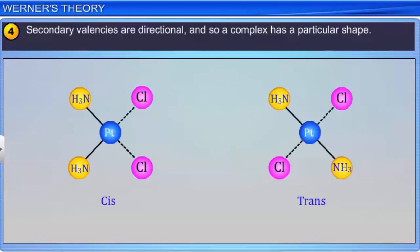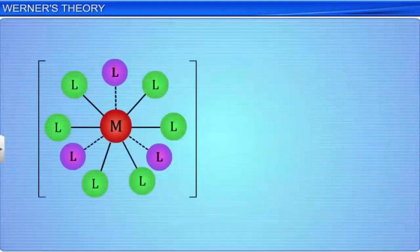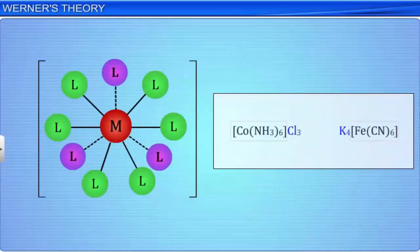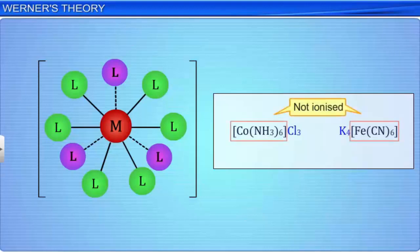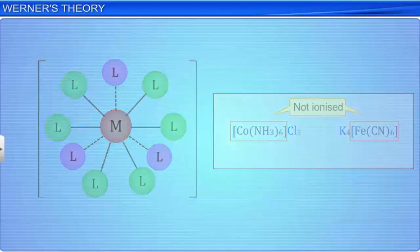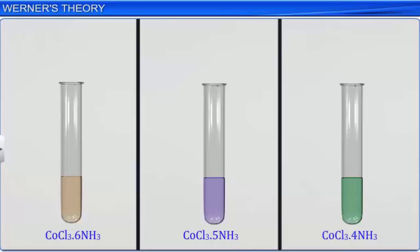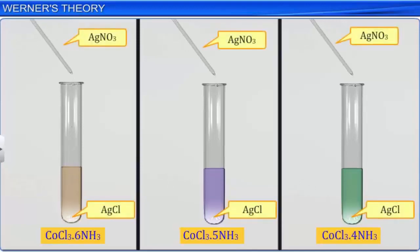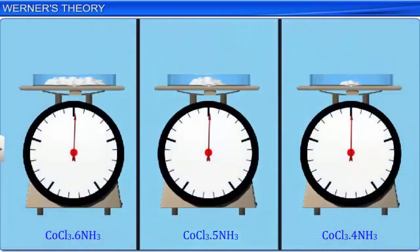To distinguish between the two types of valencies, Werner introduced the concept of using square brackets to enclose the atoms that make up a coordination complex and which are therefore not ionized. The postulates of Werner's coordination theory were actually based on experimental evidence rather than theoretical. Werner treated cold solutions of a series of compounds of cobalt 3 chloride with ammonia with an excess of silver nitrate and weighed the silver chloride precipitated. The stoichiometries of the complex silver chloride formed were as shown.